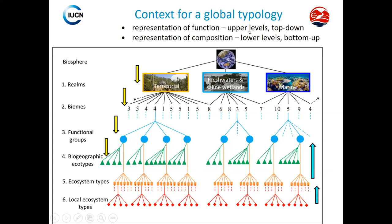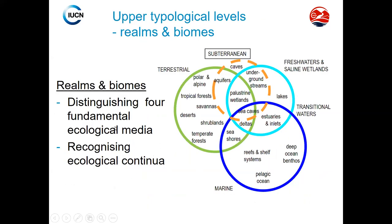The distinction in realms, biomes, and functional types is basically a structure around three main blocks — terrestrial, freshwater, and marine — with the interactions among them. The interaction between marine and freshwater would be estuaries and inlets, or deltas, or the seashore between terrestrial and marine.